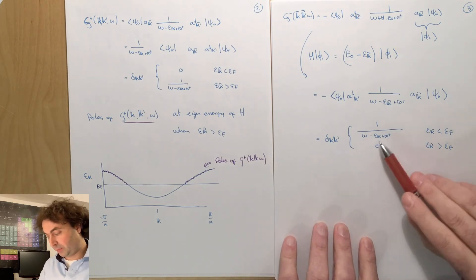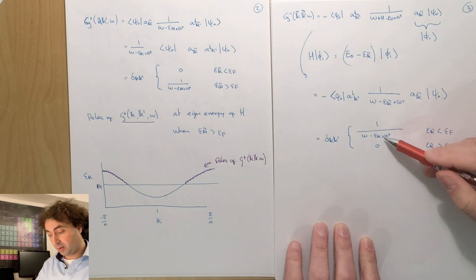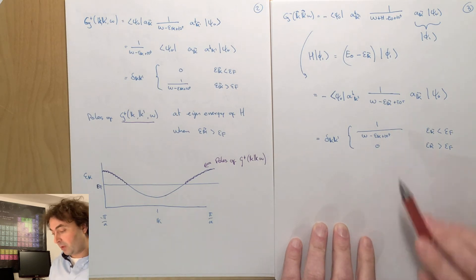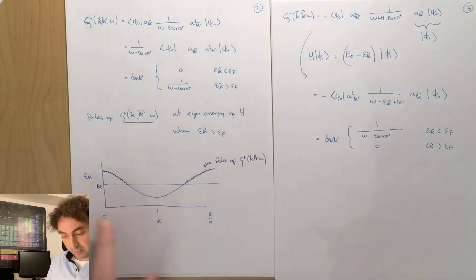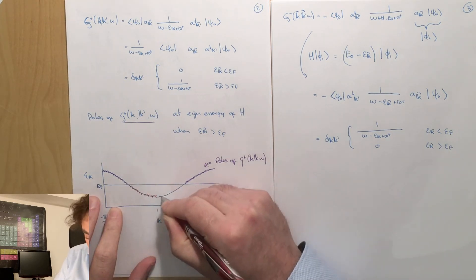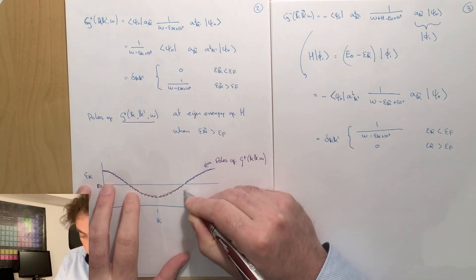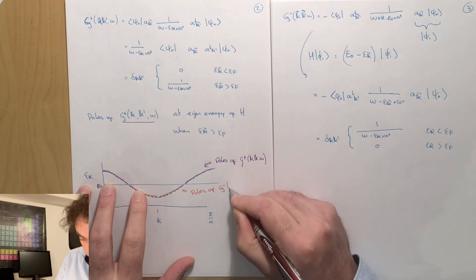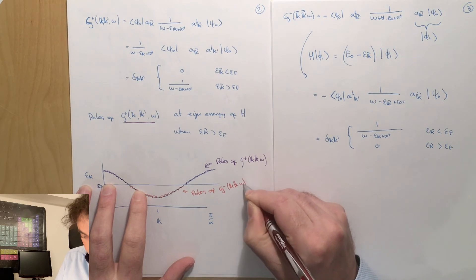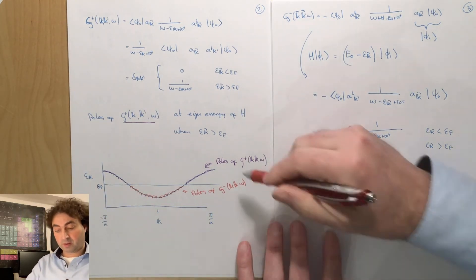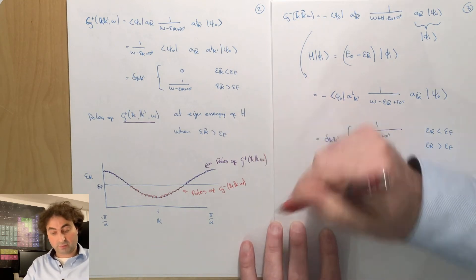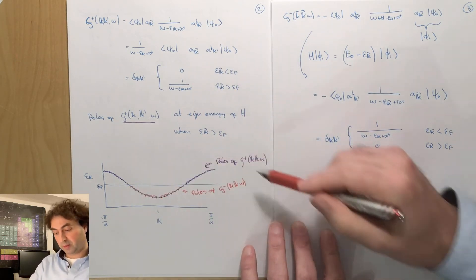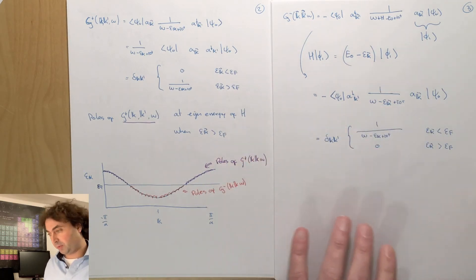Here we can also see that the poles of G minus are again at the eigenenergies of our Hamiltonian, but now for the case that the eigenenergy is smaller than the Fermi energy. The poles trace the band structure for the occupied bands. So G plus describes the propagation of electrons — the band structure above the Fermi energy — and G minus describes the propagation of holes, which is the band structure below the Fermi energy.